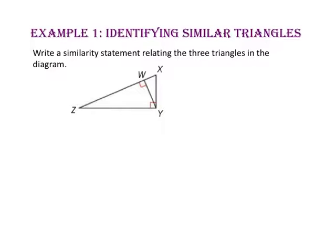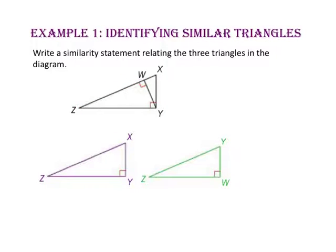The large triangle, triangle X, Y, Z, we will redraw. Now let's redraw the medium right triangle, triangle Y, W, Z. And finally let's draw the small triangle, triangle X, W, Y.